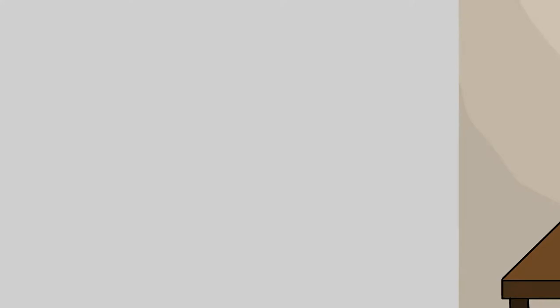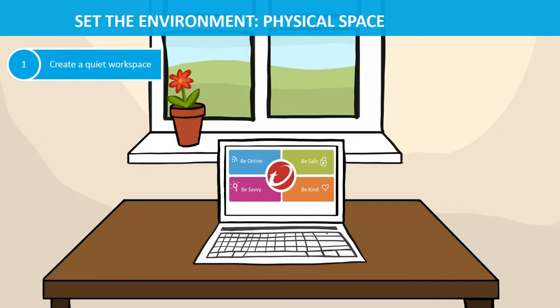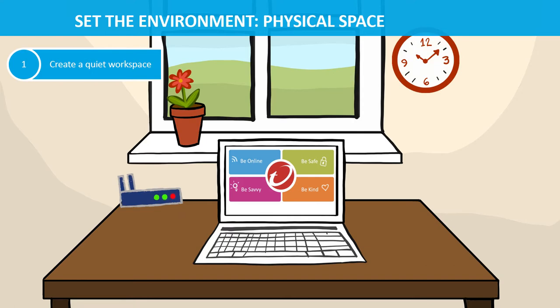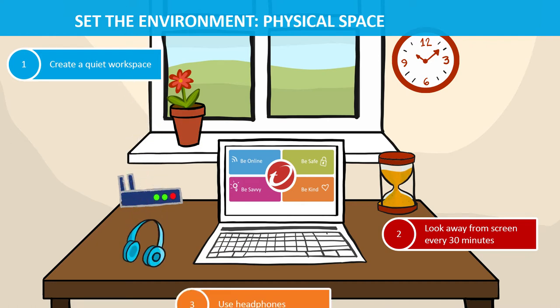Create a quiet space with adequate lighting for each person to be online. Sit upright with feet flat on the floor. Look away from the screen every 30 minutes for at least 30 seconds. Use headphones to not distract others.